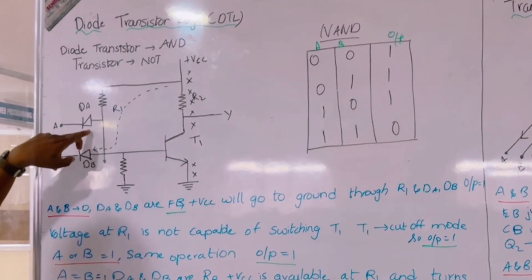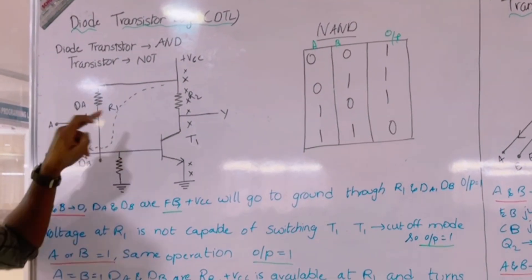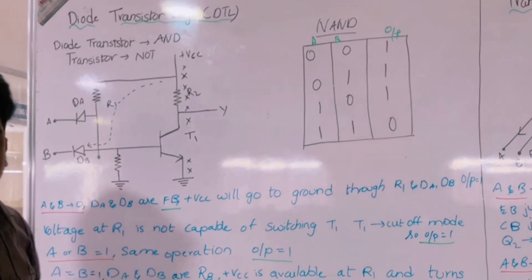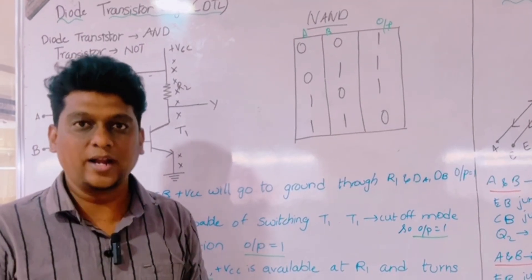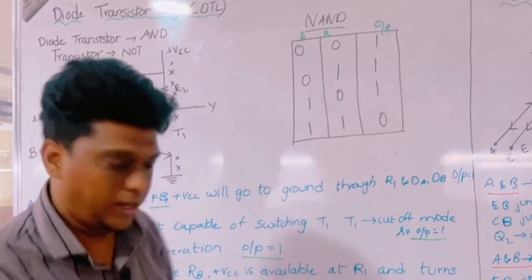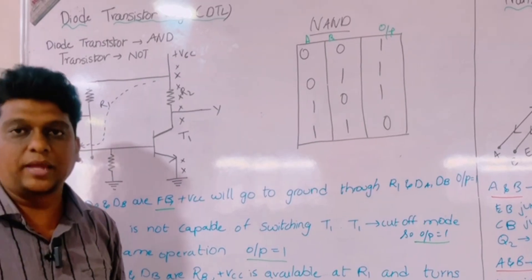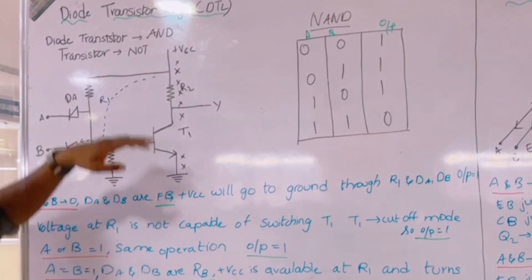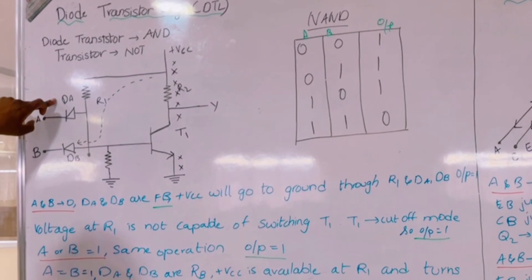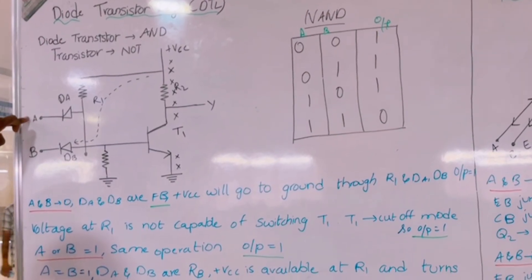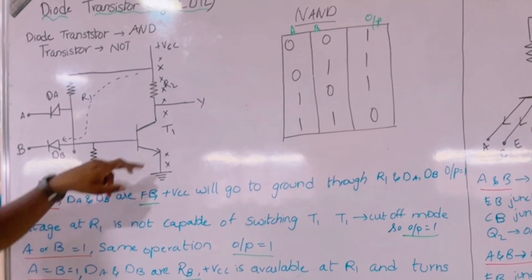We are implementing the DTL concept with a diode and transistor. The normal function of a diode is that it allows current to pass in one direction. Consider this circuit — we have diodes DA and DB, with points A and B where we provide the inputs.